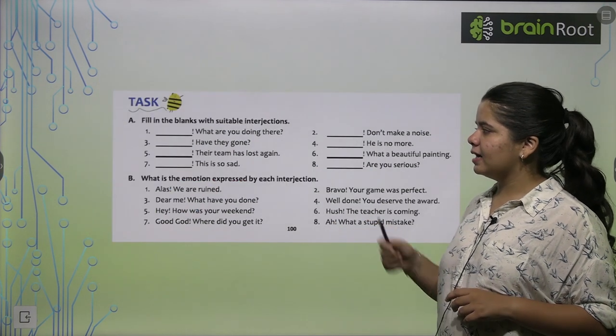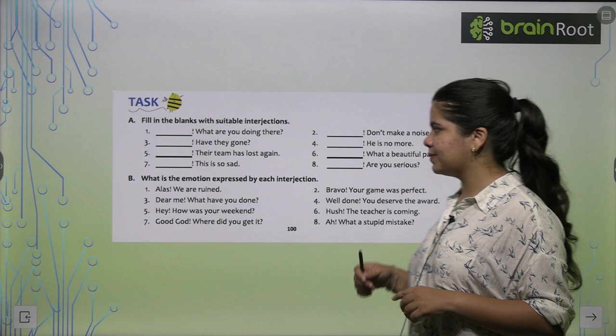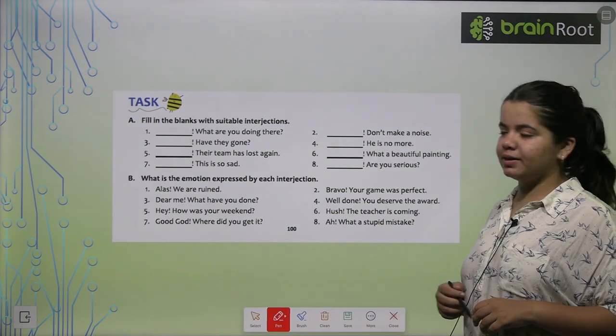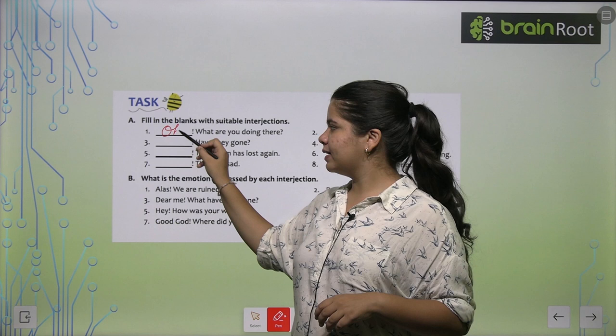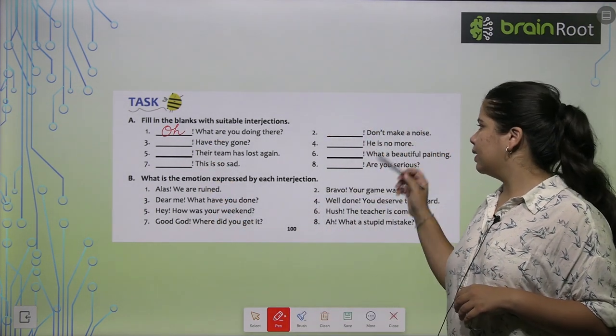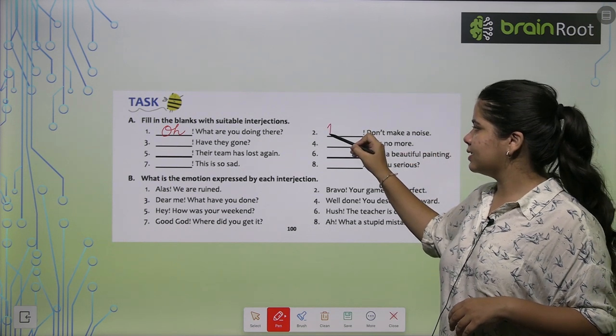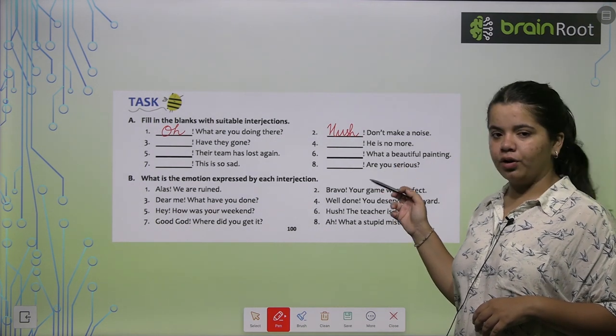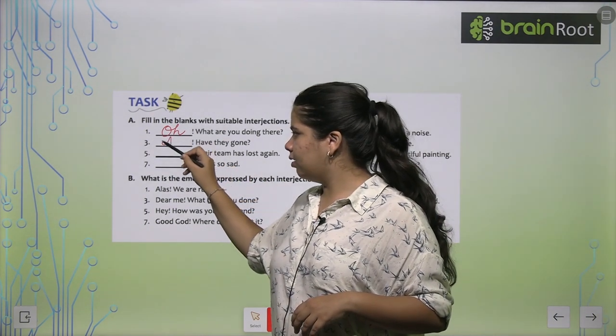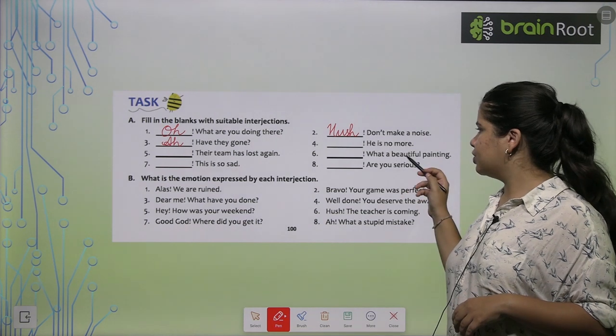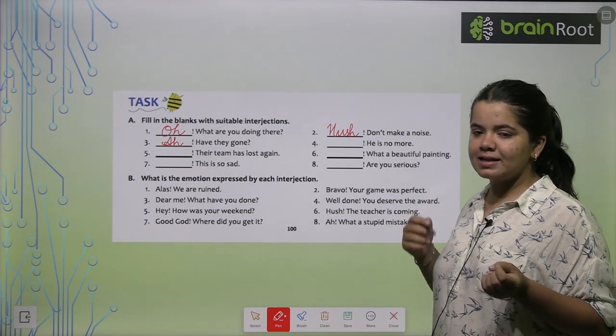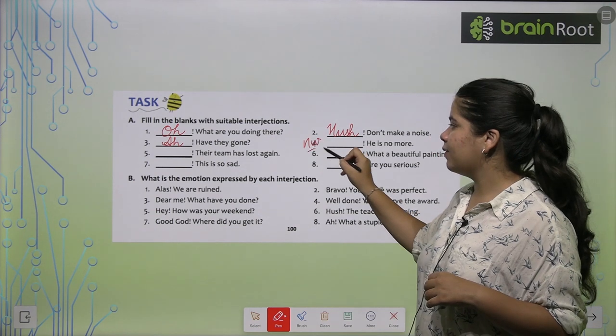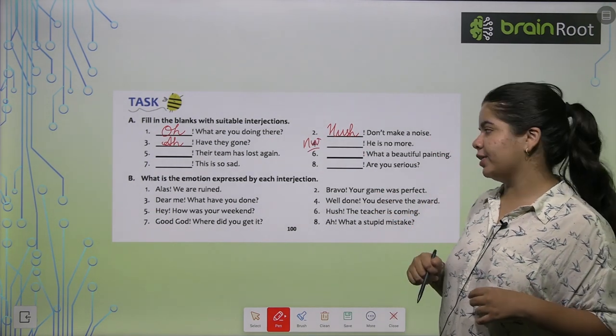Alright, now let's see ahead. Next we have a task where we need to use suitable interjections. Let's look at the first one. First one: dash, what are you doing here? We need to express a sudden surprised feeling like Oh, what are you doing here? Second: Don't make a noise. So what can we use with this? Hush. Third: Dash, have they gone? So what can we use now? Oh, have they gone? Fourth: Dash, he is no more. If you want to express your sadness, what word can you use? This one you have to try yourself. I told you on the last slide what to use for sadness.